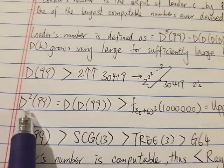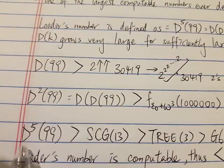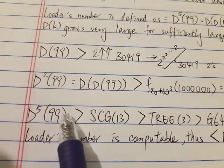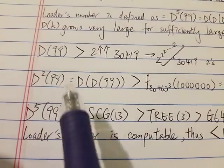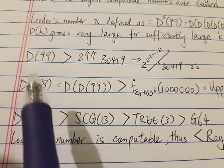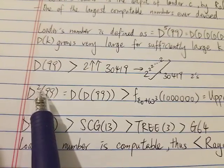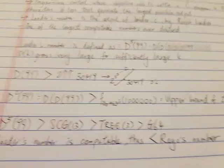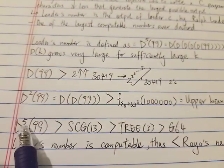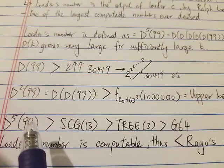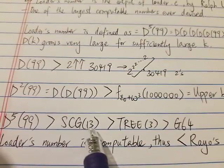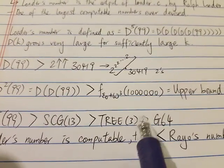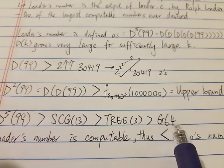Of course, this is not Loader's number. Loader's number is D^5(99). At the end, it was proven that D^5(99) is way way way bigger than D²(99), which is much bigger than the upper bound of the second place. The final output D^5(99) is way bigger than even SCG(13), and of course SCG(13) is way bigger than G3 and in turn way bigger than Graham's number G64.